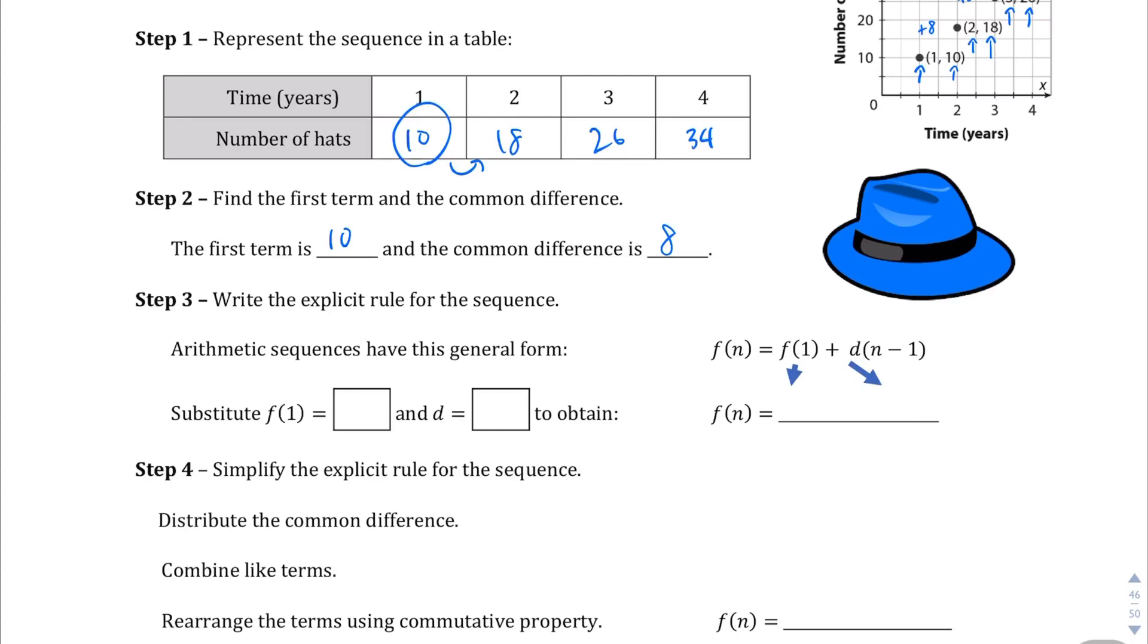Let's go ahead and write the explicit rule. We take this general format of a formula and plug in what we just wrote out in step 2. f(1), or the first term, is going to be 10. And then the common difference, or the variable d, is going to be 8. We're going to plug it in the right place, and we get 10 plus 8 times n minus 1.